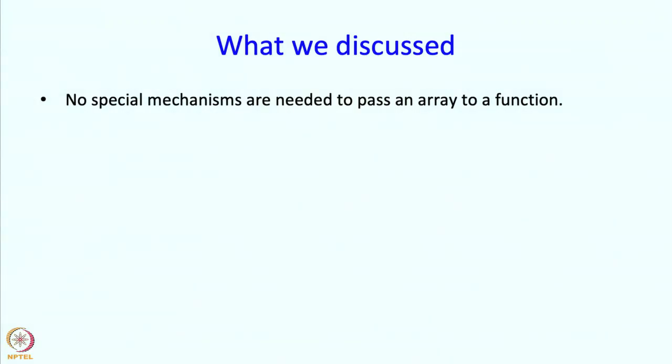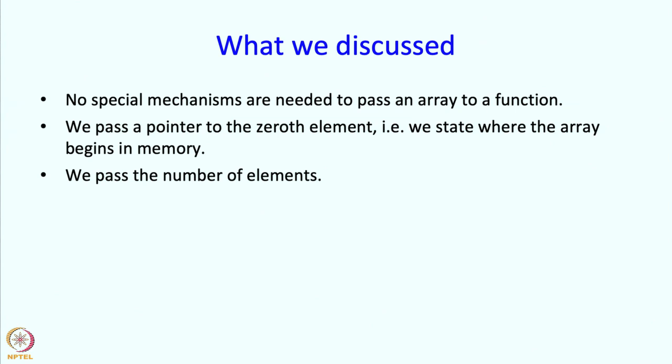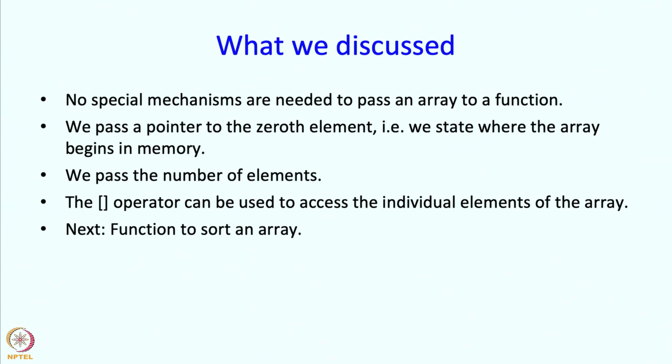So, what have we discussed? We have said that no special mechanisms are needed to pass an array to a function other than the semantics of the square bracket operator and also the idea that the array name is a pointer to the starting address of the region allocated for the array. We pass a pointer to the 0th element, that is we state where the array begins in memory, and we pass the number of elements. The square bracket operator can be used to access individual elements of the array and this concludes this segment. In the next segment, we are going to build a slightly more elaborate function, a function to sort an array. But we will take a quick break.